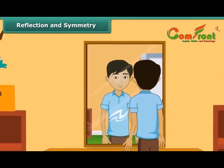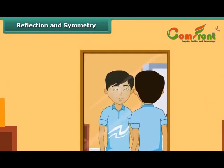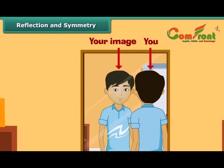Students, you must have noticed that when you see yourself in front of a mirror, you and your image are identical. The image is the reflection of the object along the mirror line. Notice that there is no change in the lengths and angles. However, in the image, the left portion of the object becomes right, whereas the right part of the object turns to the left part in the image.